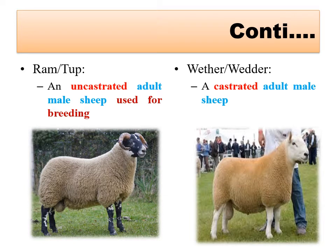For adult males, same as bull and bullock in cattle, in sheep we have ram and wether. An uncastrated adult male used for breeding is called a ram or tup in the case of sheep, while the castrated adult male sheep is called a wether.